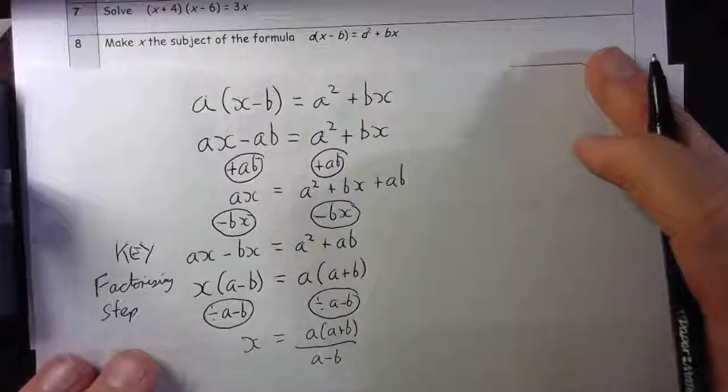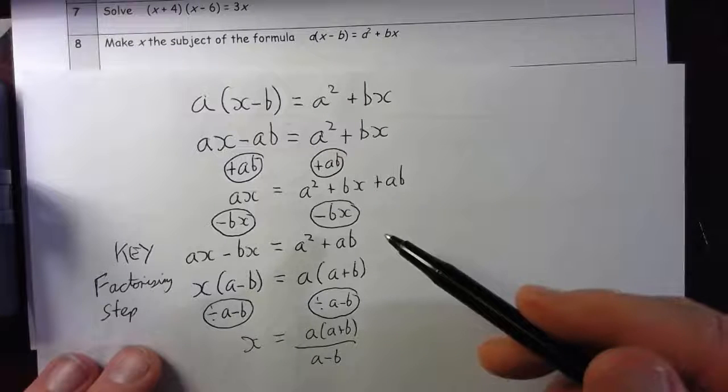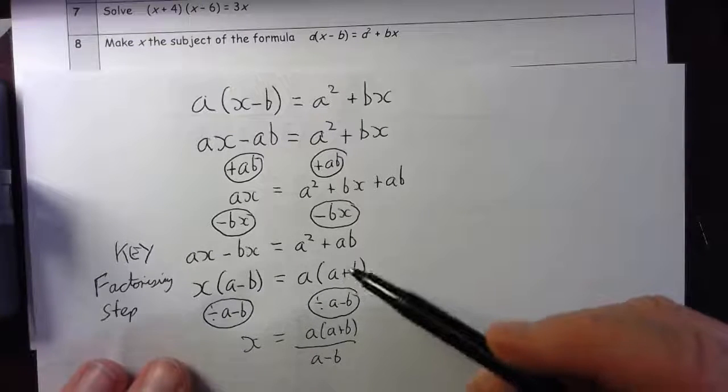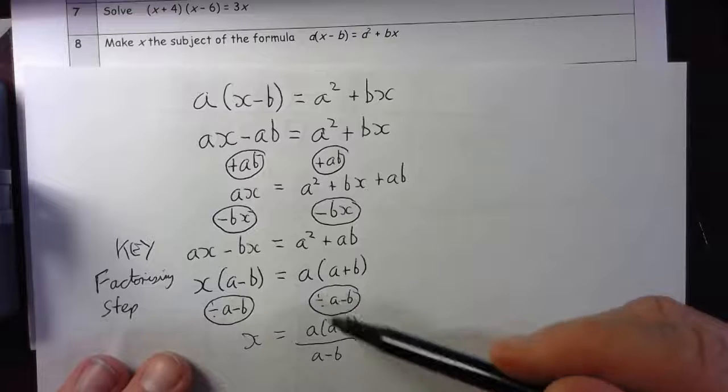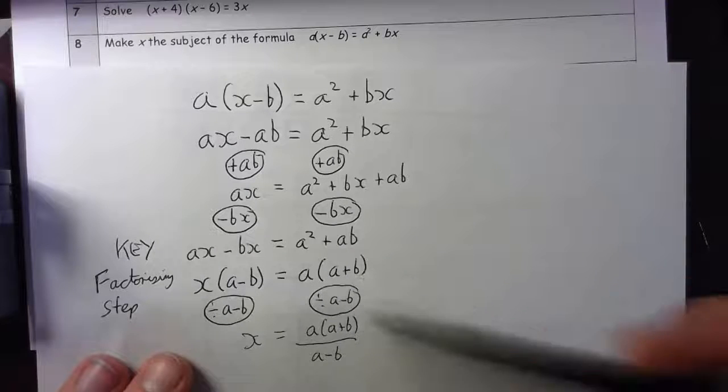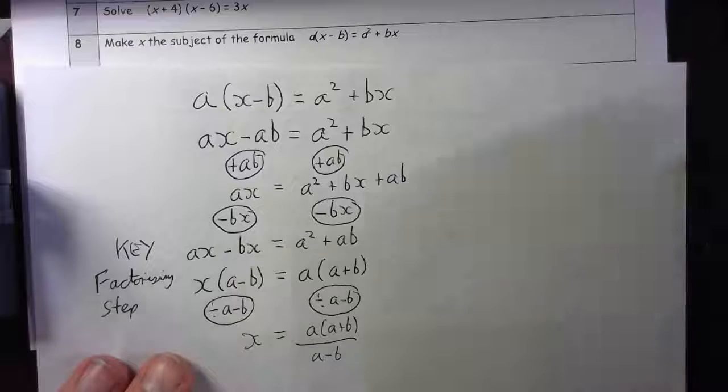That's my solution. You could leave it like this: (a² + ab) over (a-b). I just thought that if I factorized I might have a chance of cancelling, but it doesn't in this case. So I need to leave it.